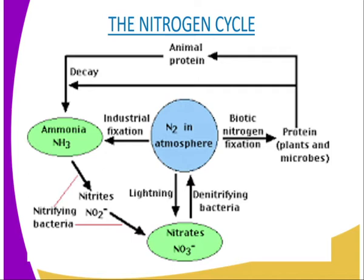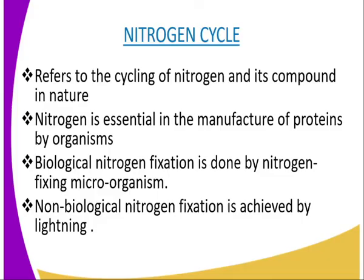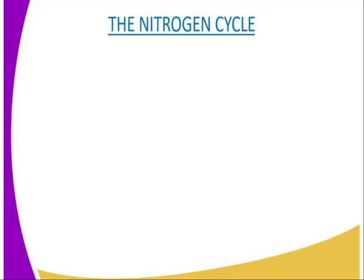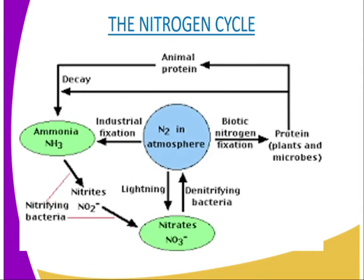Animals obtain the nitrogen in the form of protein directly or indirectly from the plants. The proteins are digested into amino acids and assimilated into animal proteins. When organisms die, all their waste and droppings are broken down by saprophytic bacteria and fungi. They break down the protein material in their bodies into ammonia.